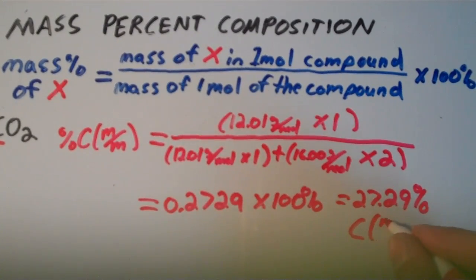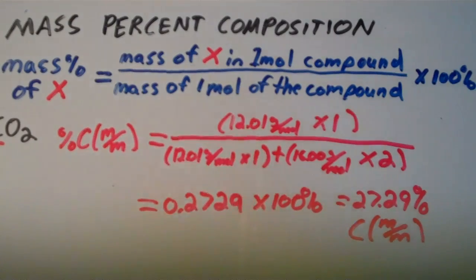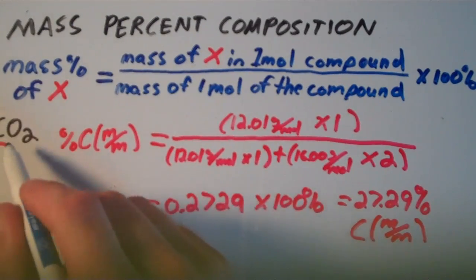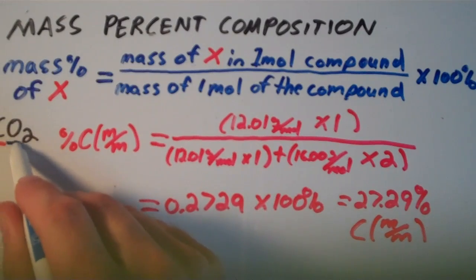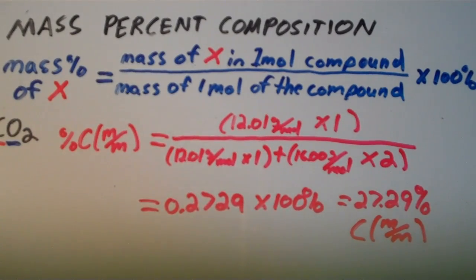That gives us 27.29% carbon, mass to mass. That's how to calculate the mass percent composition of carbon in CO2. Now suppose we wanted to calculate the mass percent composition of oxygen in CO2 — how would we do that?